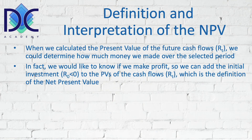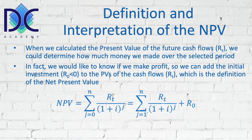We want to know if we are making a profit or not. Our initial investment is typically called R0, which is considered to be a negative value. We want to see what the present values of the future cash flows are. When you combine those — when you take the sum of all those present values of the future cash flows and subtract the initial investment — this gives us the Net Present Value.